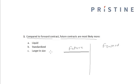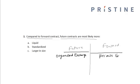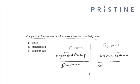The future contracts are traded on organized exchanges, whereas forward contracts are private contracts and they do not trade on exchanges. The future contracts are highly standardized, and the forward contracts are customized contracts satisfying the needs of the parties involved, so the forward contracts are highly customized.